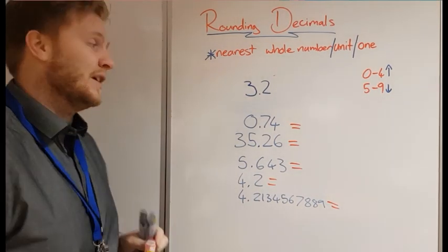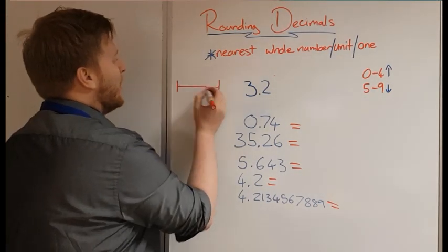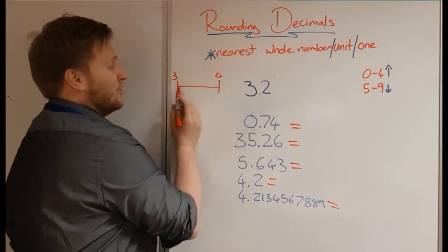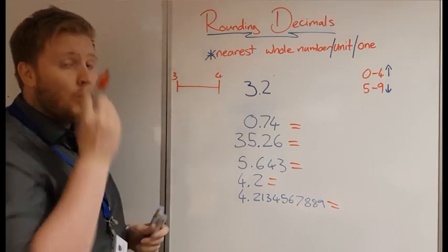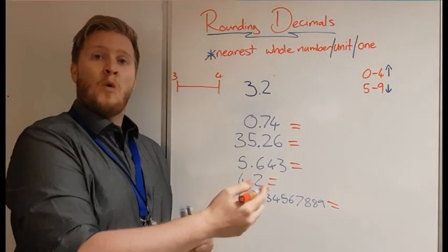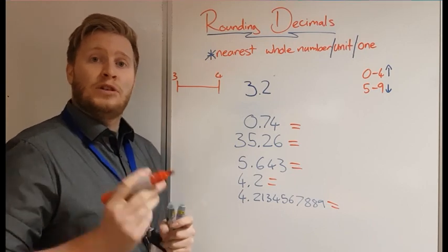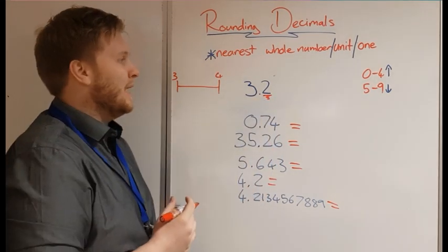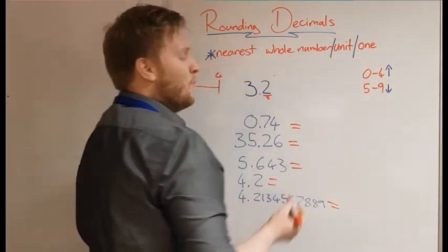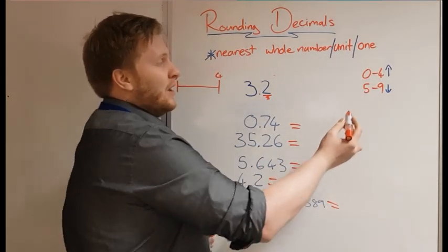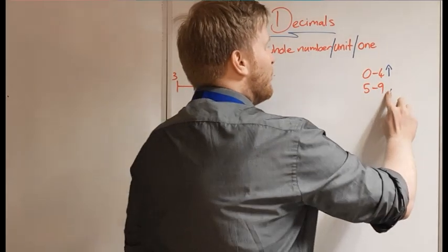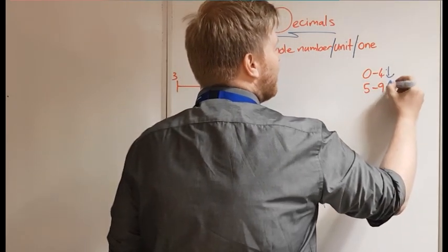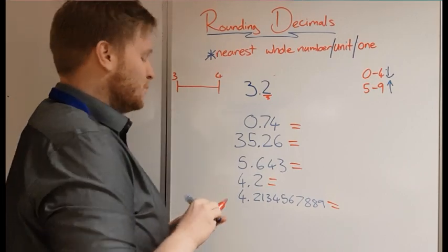When we're rounding 3.2 to the nearest whole number, we look at a number line. We've got three here and four there, and we're finding which number 3.2 is closest to. When we round, we always look at the number one place value down from the one we're rounding to. So when rounding to units, we always look at our tenths column — the first digit after the decimal point. If it's 0 to 4, we round down; if it's 5 to 9, we round up.